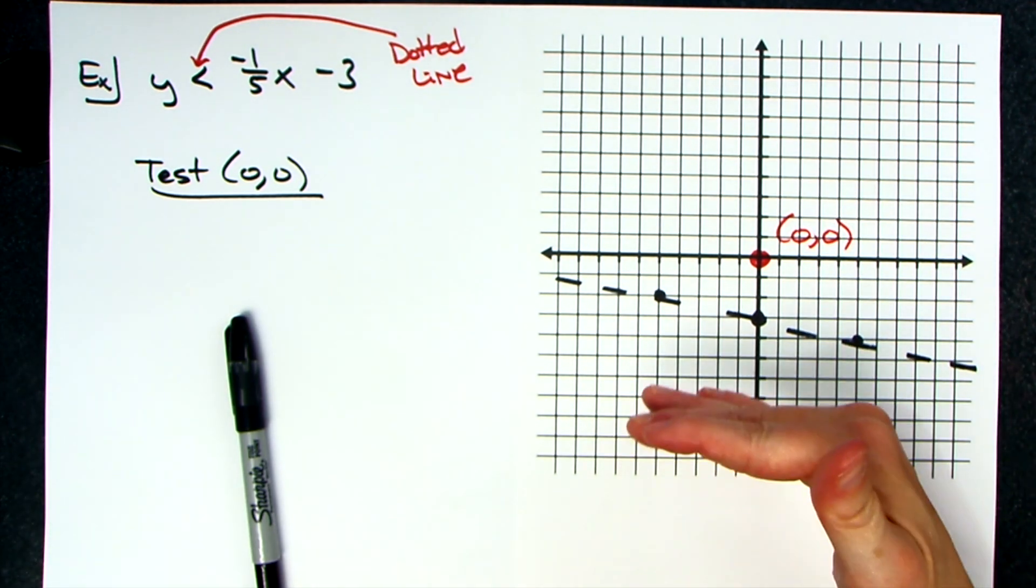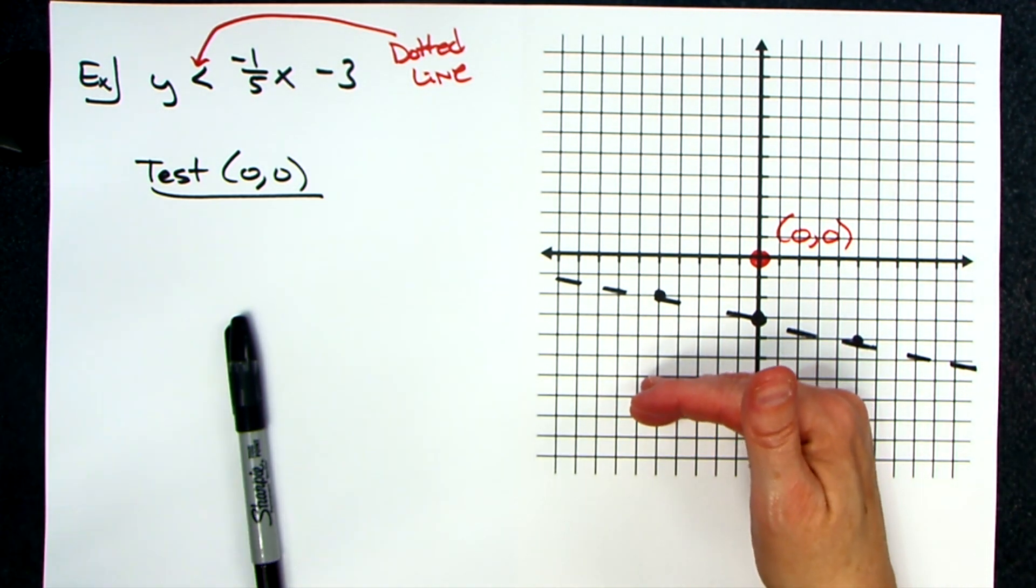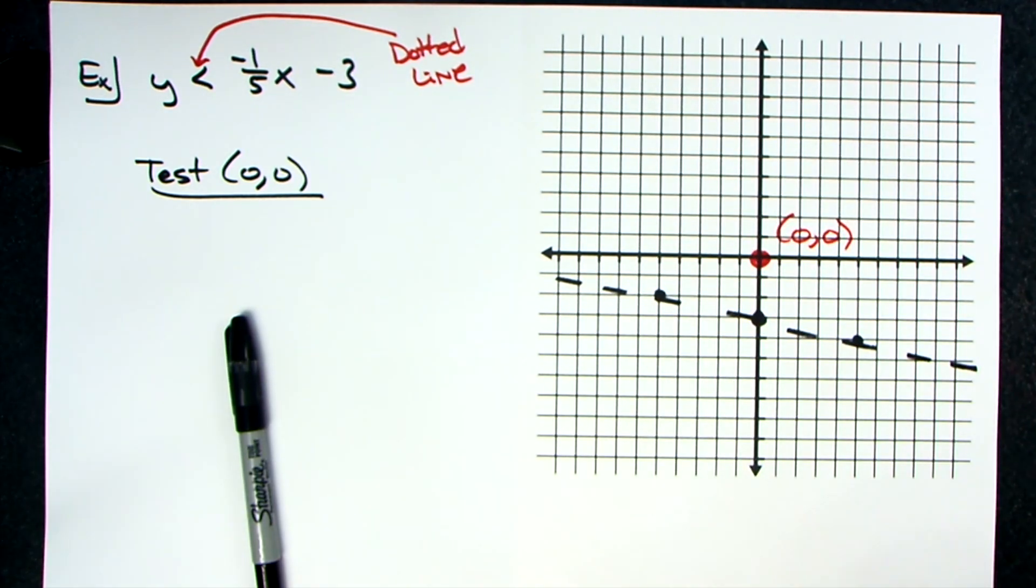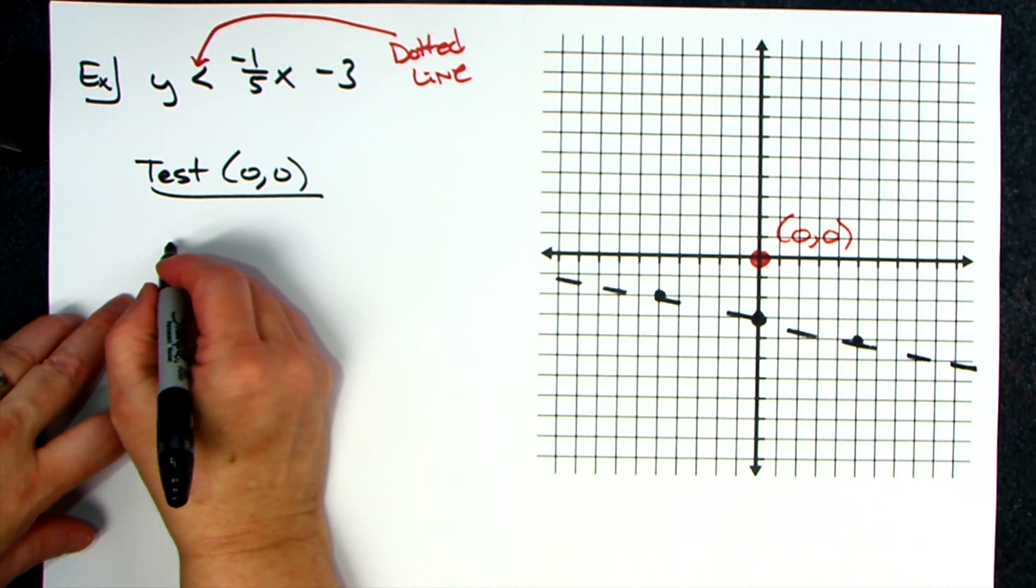If the line or inequality that you graph goes through zero zero, you have to pick a different one. But in this case, it did not go through it, so I can pick zero zero.